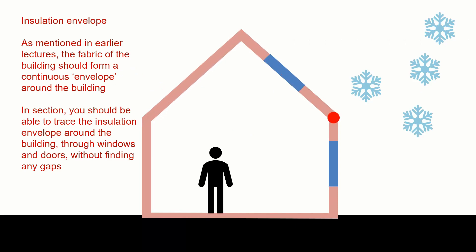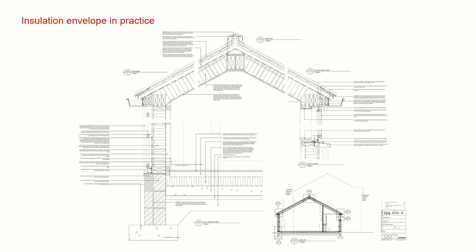As mentioned in earlier lectures, we try to think of each aspect of the envelope as a continuous layer around the building. So if you're thinking about a section or a plan, you should be able to put your finger or pen on the insulation and trace it around — through roof lights, through windows, through the junctions to the floor — all the way around without finding any gaps. If there are gaps, then effectively there's a hole.